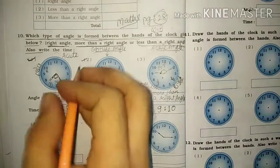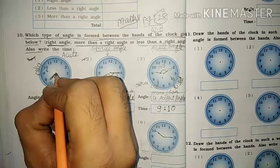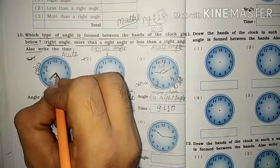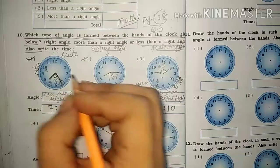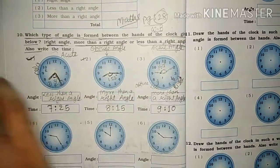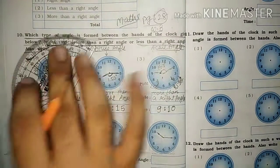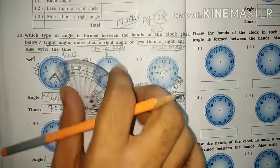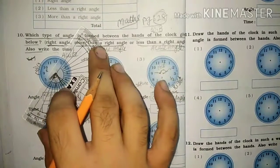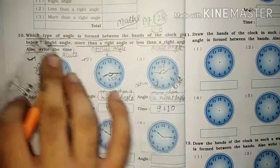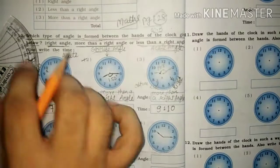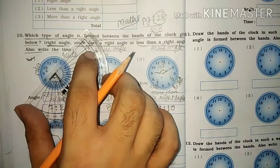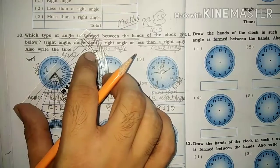The two hands are given here — one is the hour hand and the next one is the minute hand. What I have to do is keep the protractor at the meeting point of the two hands. You have to keep the protractor there and measure which angle is formed.